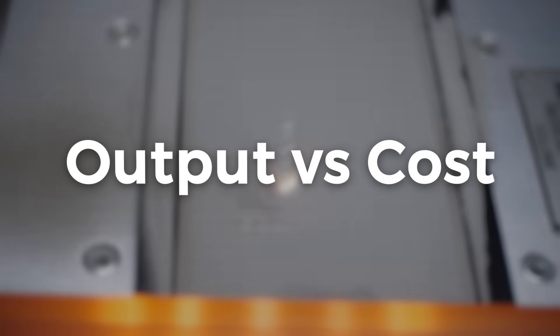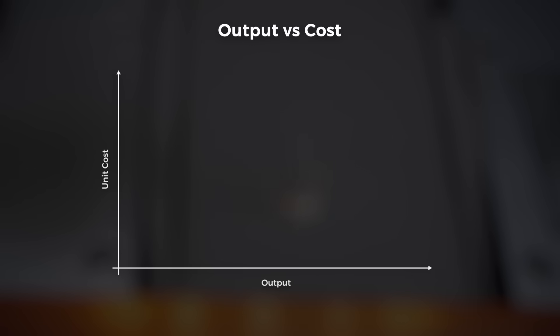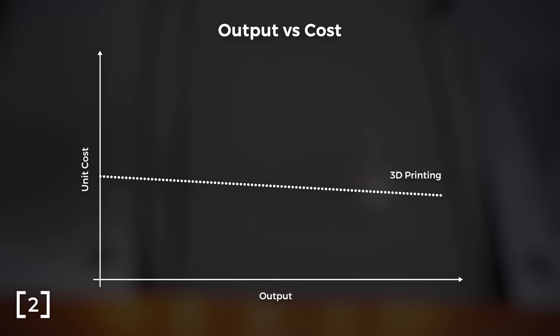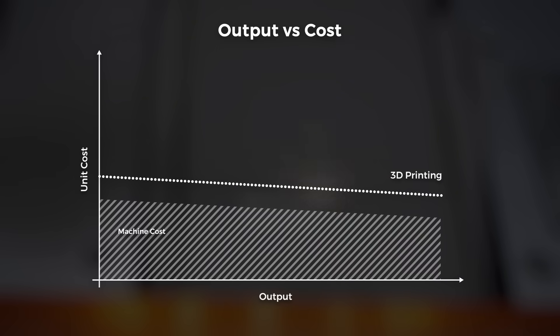If we plot the price of a 3D printed part as a function of the number of parts created, it would look something like this. Its price will be dominated by initial machine costs, and that line will only marginally trend downwards as we print more parts, due to the insane time it takes to print a single part.